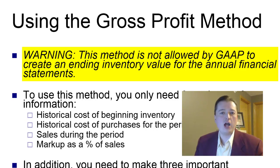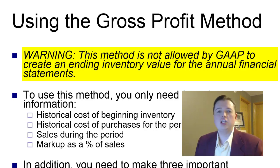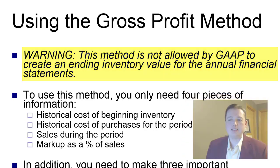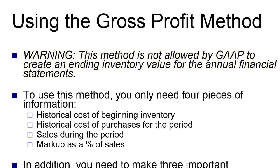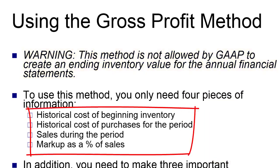You just have to be careful not to use it in annual statements. To use the method, you'll need four pieces of information: the historical cost of beginning inventory, net purchases under historical cost, the amount sold during the year, and your markup as a percentage of sales. As long as you've got those four pieces of information, it's a relatively straightforward calculation.